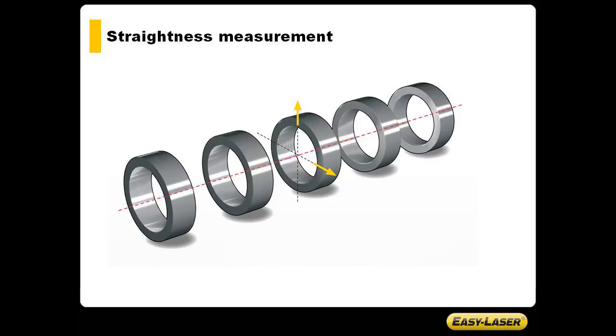The basic principle for straightness measurement is that all values will show the position of the detector unit relative to the laser beam. The laser beam is roughly aligned along the measurement object. The detector is then positioned on the selected measuring points and the values are registered. According to the measurement, two of the measuring points are set to zero and the other points are recalculated for this reference line.